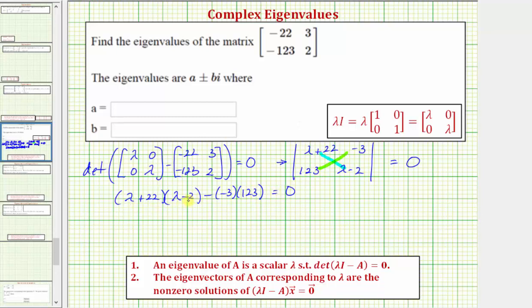Let's go ahead and multiply these two binomials. So we have lambda squared minus 2 lambda plus 22 lambda minus 44. And then here we'll have minus negative 369 or plus 369 equals zero.